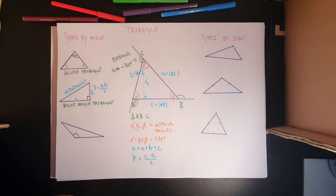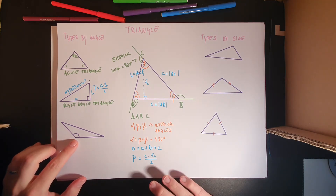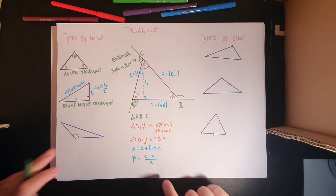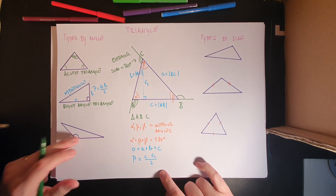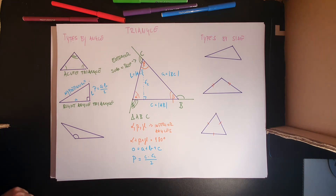The third type by angles has one obtuse angle; the other two must be acute. This is called an obtuse triangle.